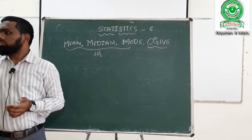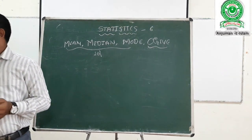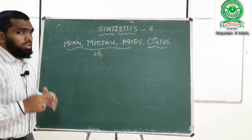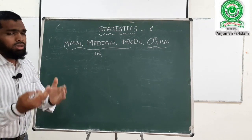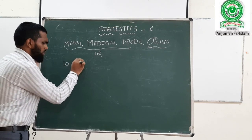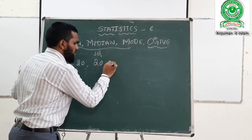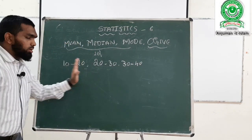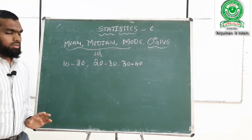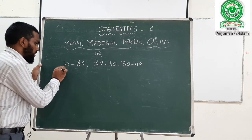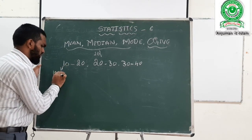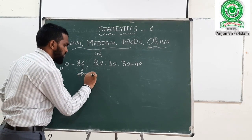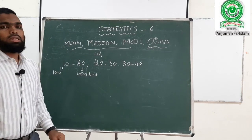Now we have to analyze. What is the meaning of class mark, class interval, and frequency? The class mark is the upper limit and lower limit of the class. So what is the meaning of class? A number — for example 20 to 30, 30 to 40 — these numbers represent the class interval. This represents the lower limit and this one is the upper limit of the class.